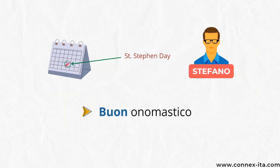I'd also like to mention another occasion that people often celebrate in Italy — it's when someone's named after a saint. In Italian we call this day onomastico. For instance, on the 26th of December is Saint Stephen's Day, so if you know someone with that name you can tell him: buon onomastico. Stefano is the Italian for Stephen.